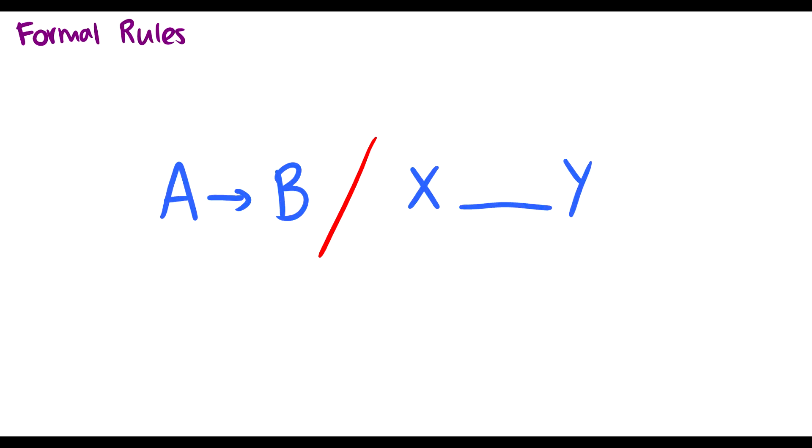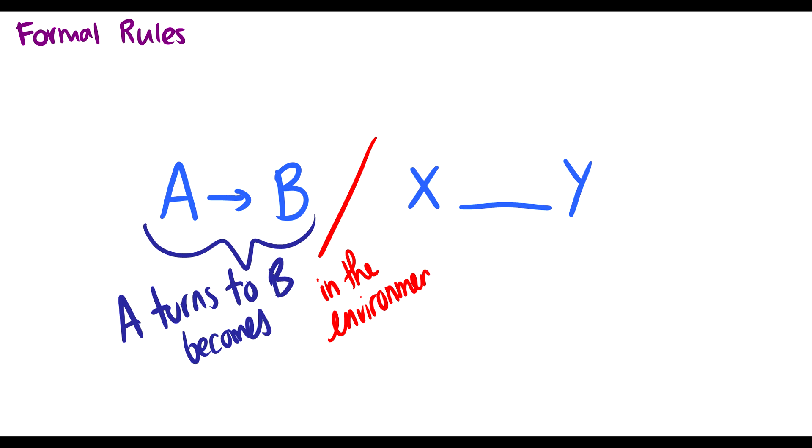But even though we have these thoughts and we say maybe these rules aren't how things work, we're going to teach it anyway because it's in every textbook and it's good to think a little bit differently. So here's how we write rules. This looks weird, right? We have an A, we have an arrow, we have a B, we have a slash, we have an X, we have an underscore, we have a Y. What does this mean? So the first part here says that was a terrible thing. This means A turns to B or A becomes B.